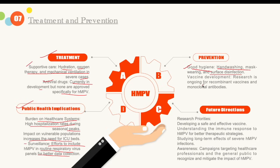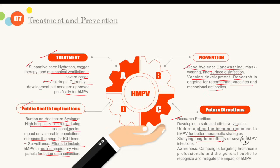Prevention includes good hygiene — hand washing, mask wearing, and surface disinfection. Vaccine development is ongoing, with research into recombinant vaccines and monoclonal antibodies, but as of now there are no approved vaccines for HMPV. Future research priorities include developing a safe and effective vaccine, understanding the immune response to HMPV for better therapeutic strategies, and studying long-term effects of severe HMPV infections. Awareness campaigns targeting healthcare professionals and the general public are also important.